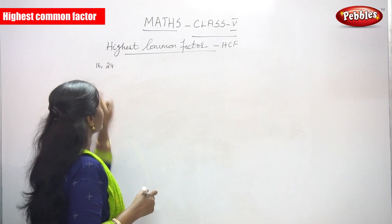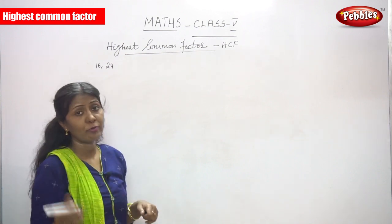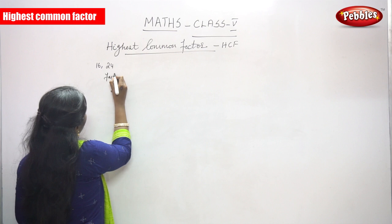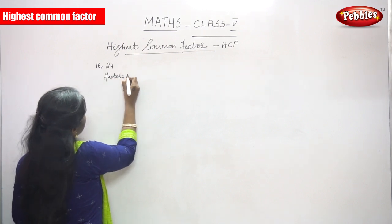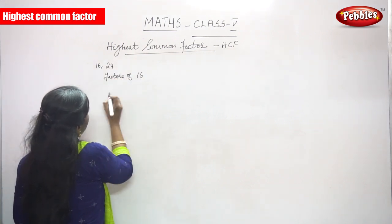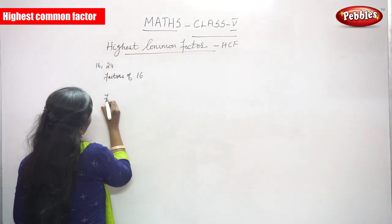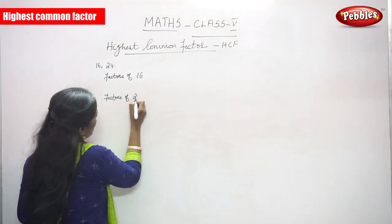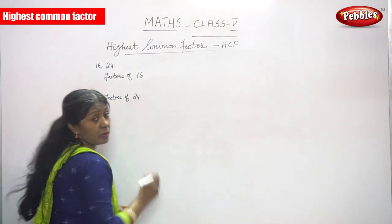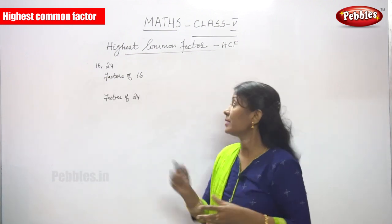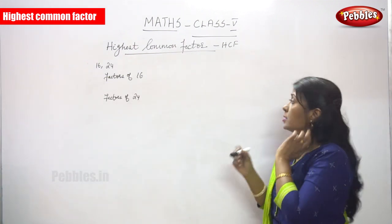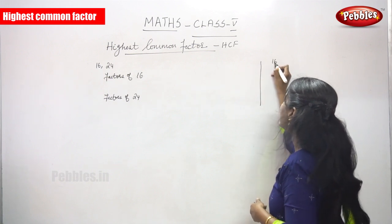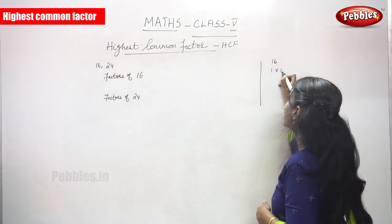The problem is: find the HCF of 16 and 24. First, you have to find out the factors of 16, then you have to write the factors of 24. So first, let's write the factors of 16.